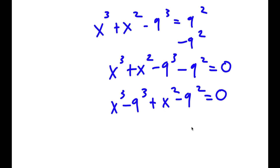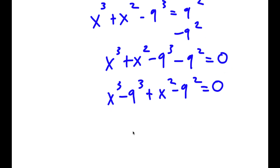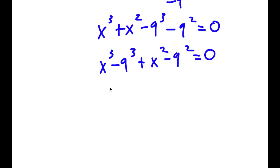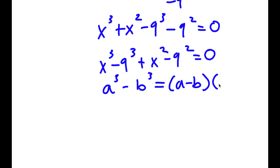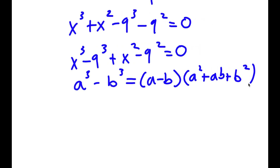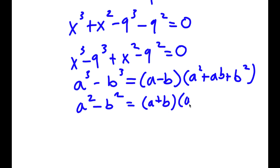To expand this problem I'm going to use some properties of algebra. If I have something in the form a to the power of 3 minus b to the power of 3, this equals a minus b times a squared plus ab plus b squared. And if I have a squared minus b squared, this equals a plus b times a minus b.